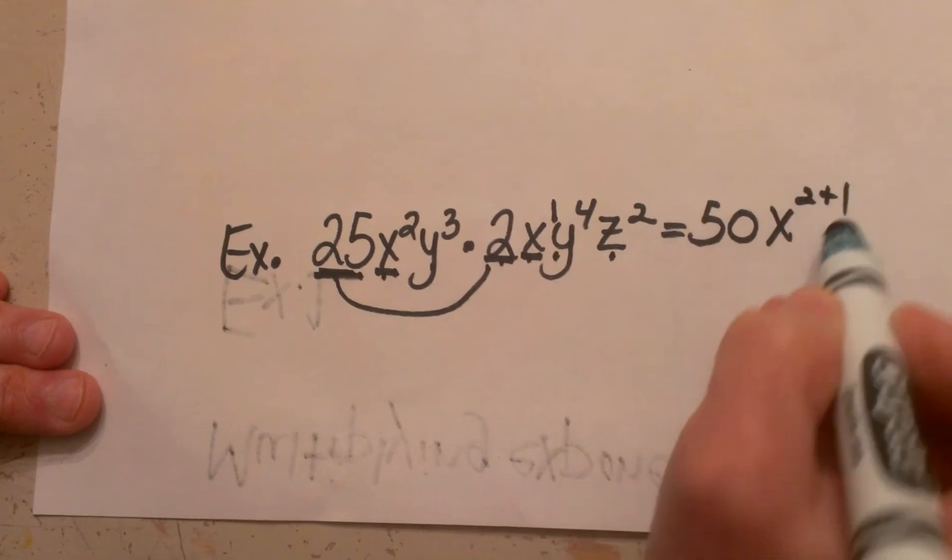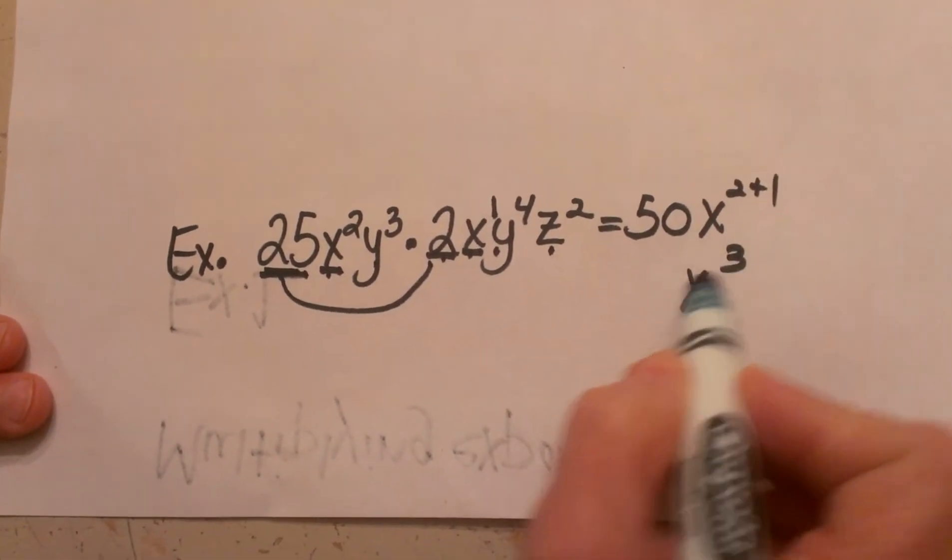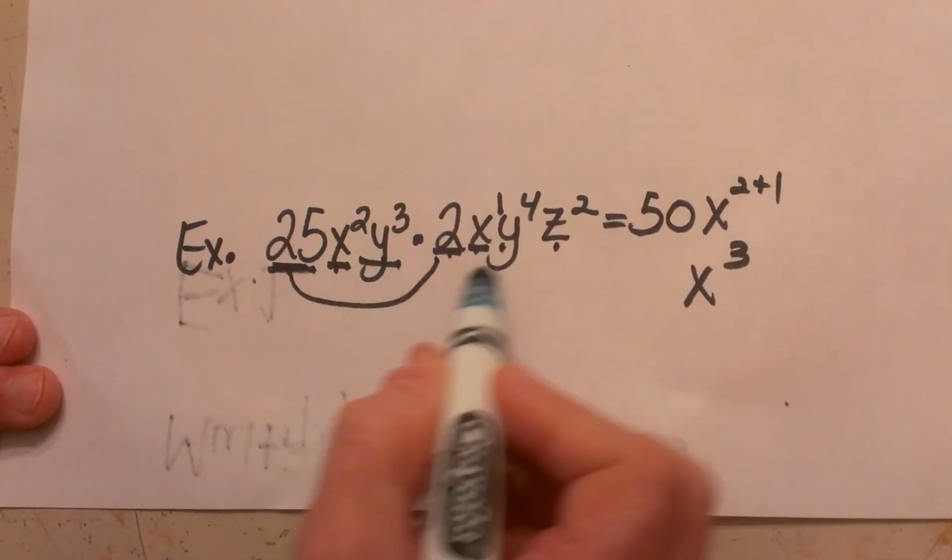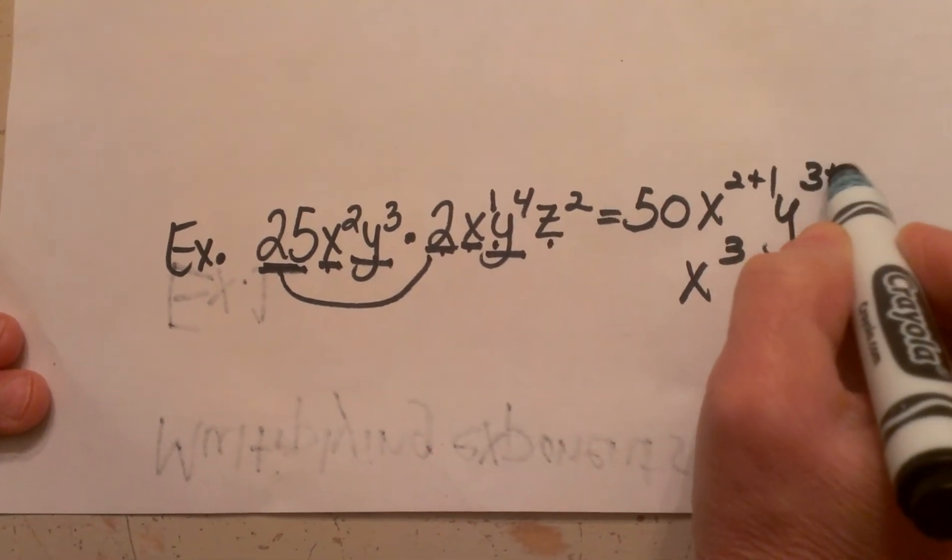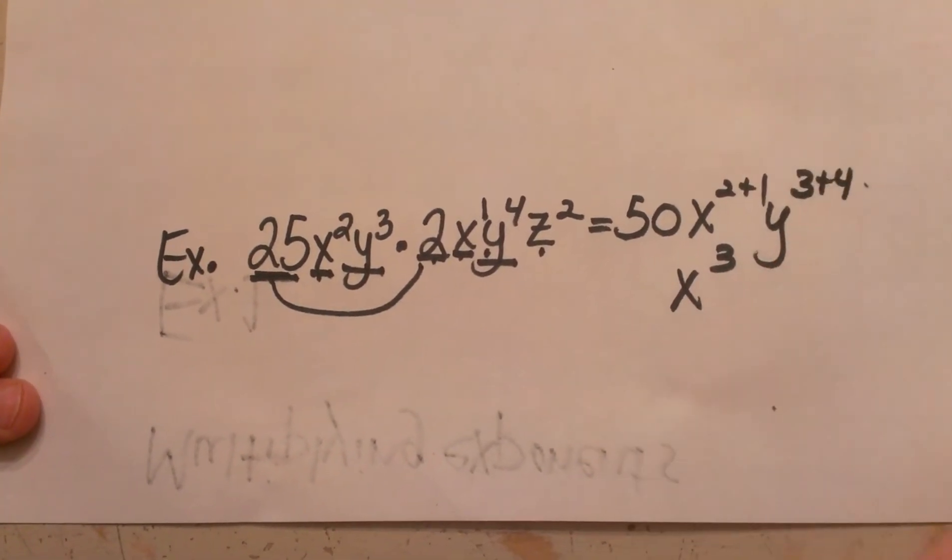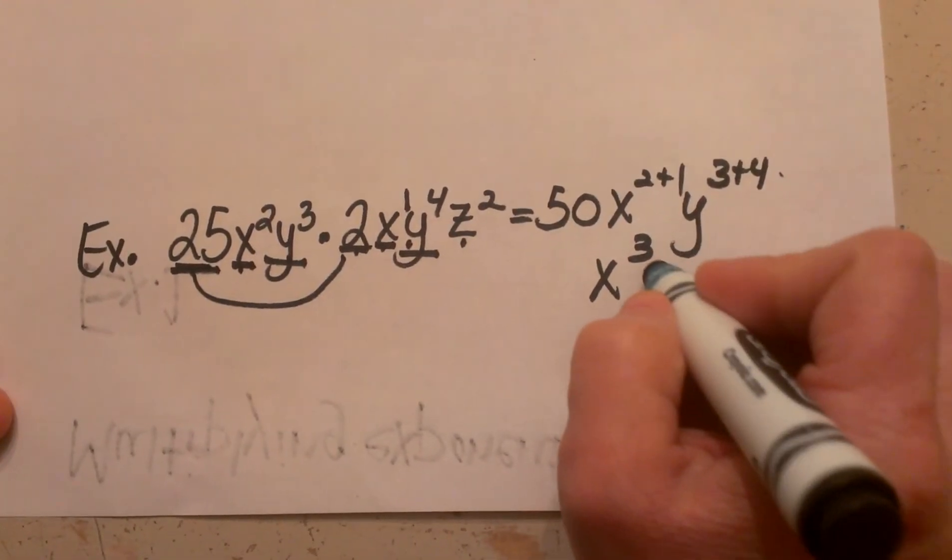So I am going to add my exponents to x cubed times y to the fourth. So y cubed and y to the fourth I again add those exponents. That is going to add to y to the seventh.